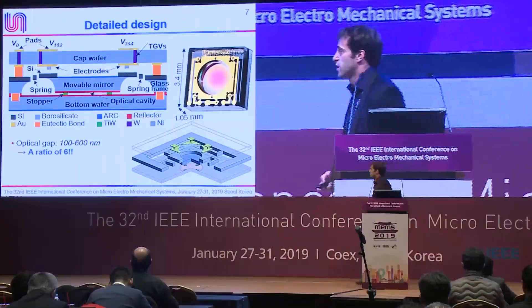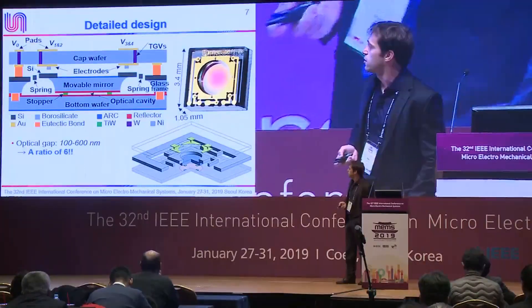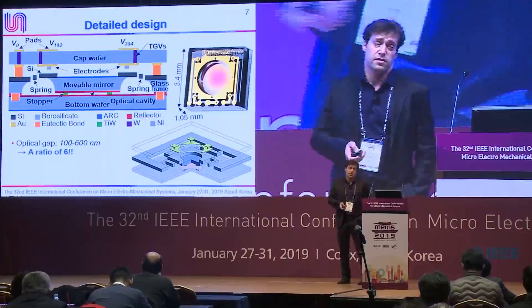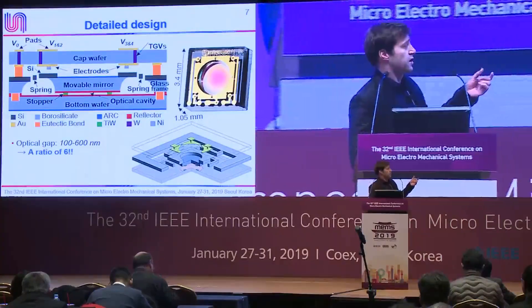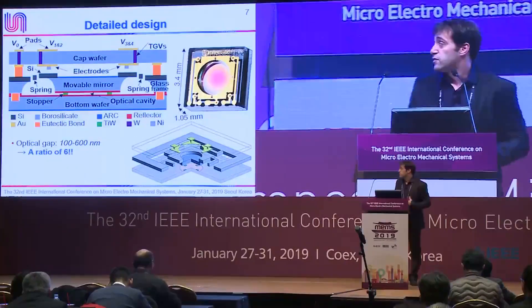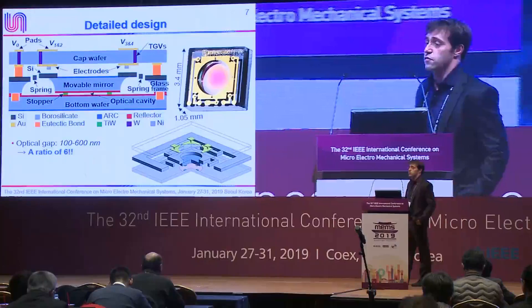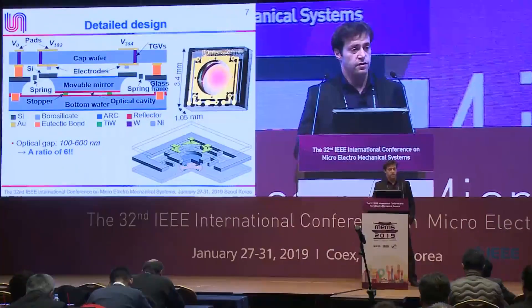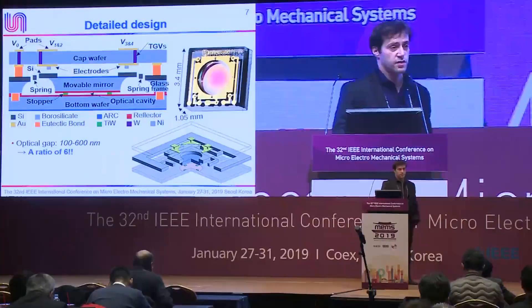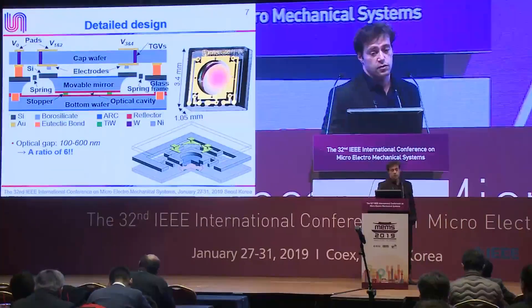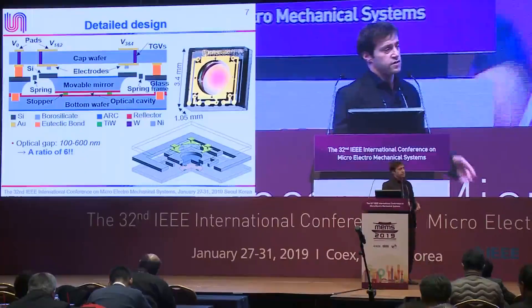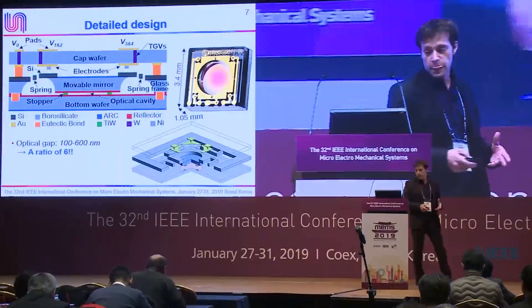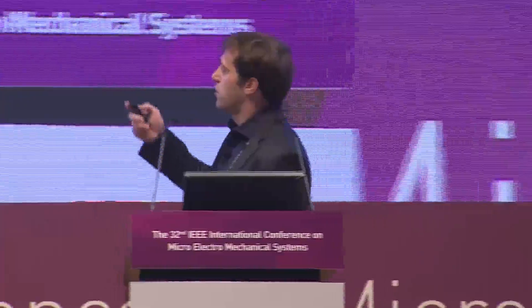The device was manufactured at a commercial foundry, and it is shown here on the top right. It has a very small form factor, and the thickness is merely 1.05 millimeters. In its cross section, you can see it is composed of three wafers: the middle SOG wafer, which carries the movable mirror suspended by silicon springs that are DRIE-etched in the silicon layer; the bottom wafer, which carries the stationary mirror; and the electrostatic actuation done using electrodes deposited on the cap wafer and connected to exterior pads using glass-through vias.